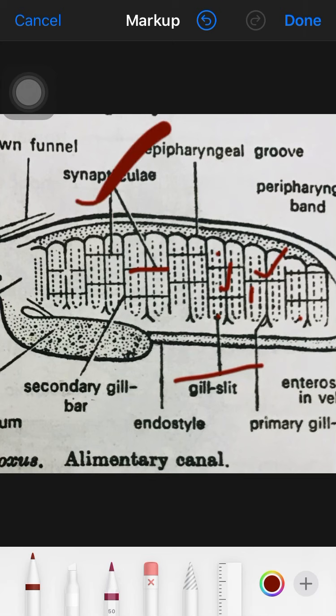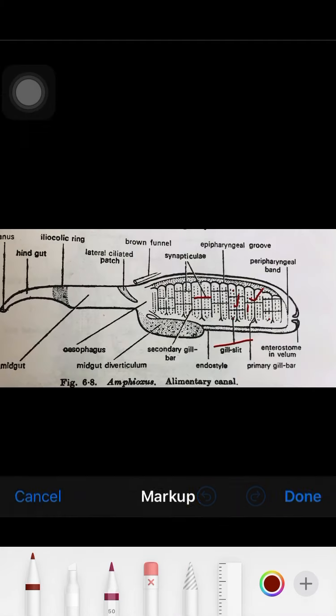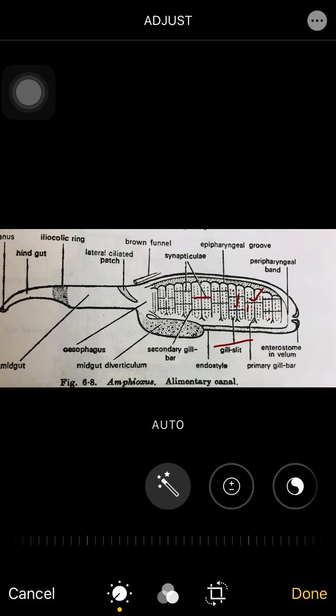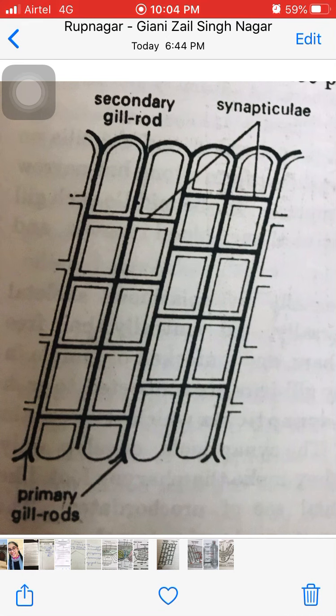Now structurally, the primary gill bars, also called branchial lamellae, are two types which are different from each other in structure as well as mode of development.